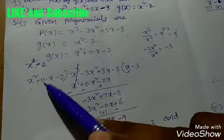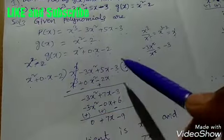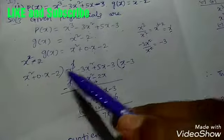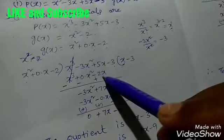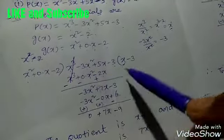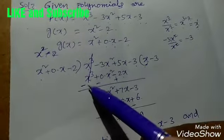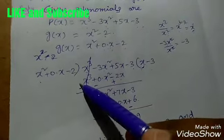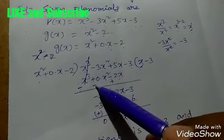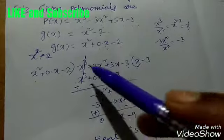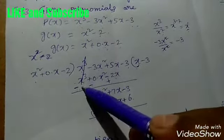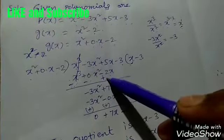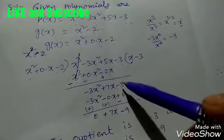Multiplying x by (x² + 0·x - 2) gives x³ + 0x² - 2x. Subtracting this from the dividend (signs change: plus becomes minus, minus becomes plus): x³ - x³ cancels. We get -3x² - 0 = -3x², and 5x + 2x = 7x. Bringing down -3, the new row is -3x² + 7x - 3.